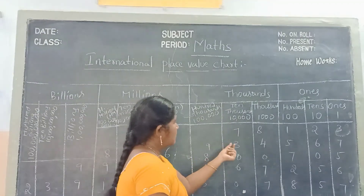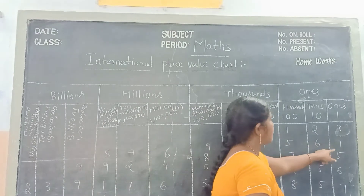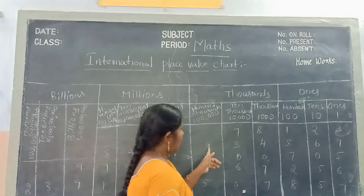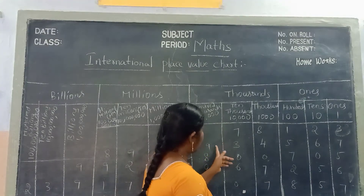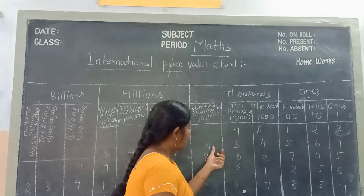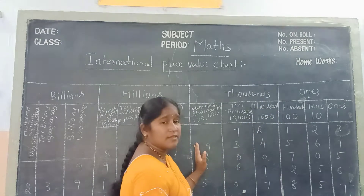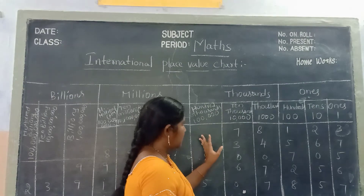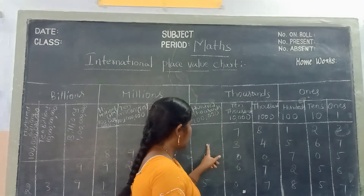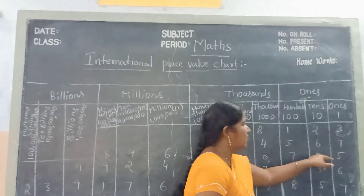And next number, see children: 9, 3, 4, 5, 6, 7. How to read this one? See children: nine hundred and thirty-four thousand five hundred and sixty-seven. We separate into three, three, two — that is why we read it like: nine hundred and thirty-four thousand five hundred and sixty-seven.